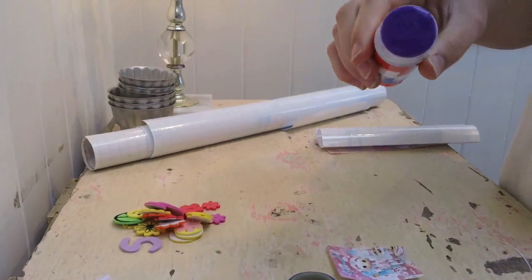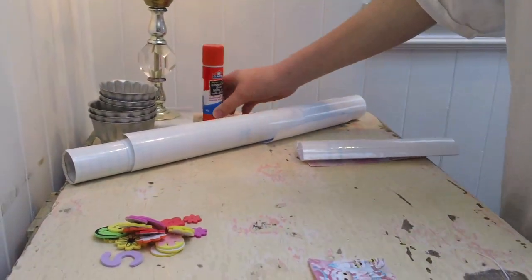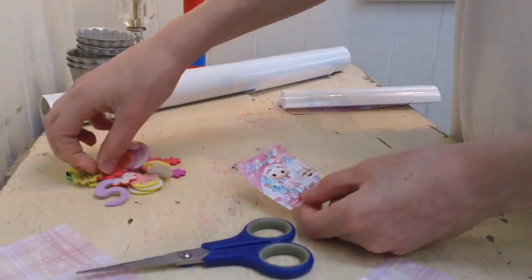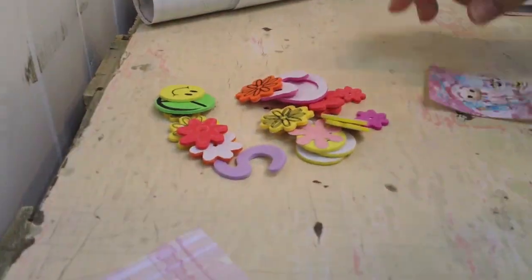So we're just using Elmer's, you can use any glue, it all works. And we just took this for little decorations. So since our picture is Suzette Lalaloopsie, we have an S and plenty of little things to stick on as a finishing product.